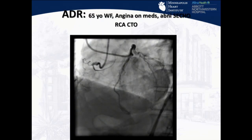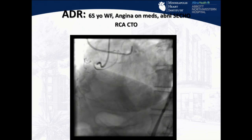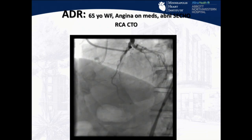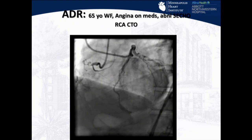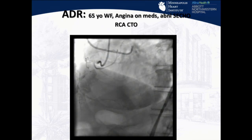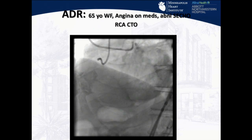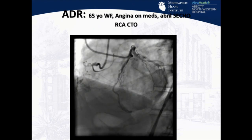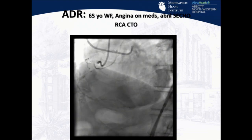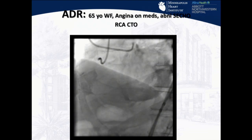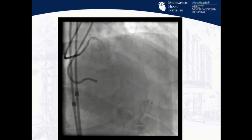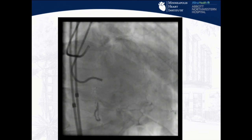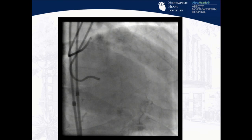This is one case of antegrade dissection — a 65-year-old female with angina on maximal medications. She has an abnormal stress echocardiogram and an obvious right coronary artery CTO. The proximal cap is somewhat ambiguous, but from other views we could see where the side branches came off and identify a good starting point.